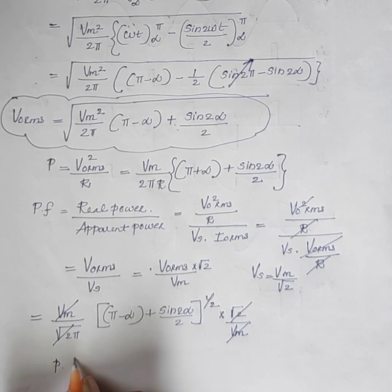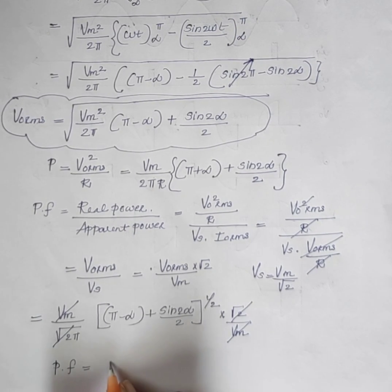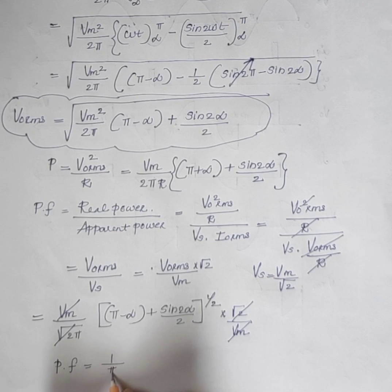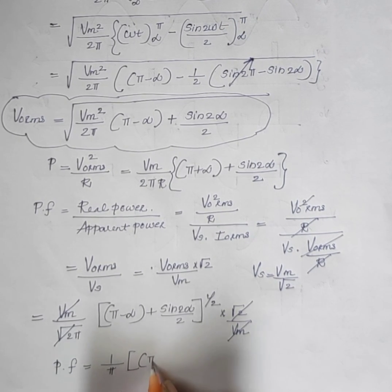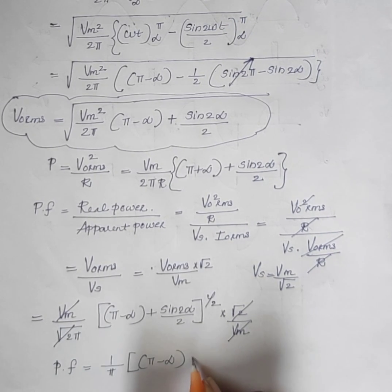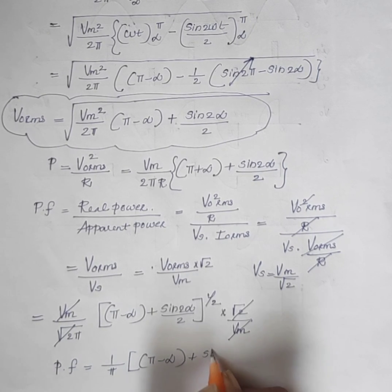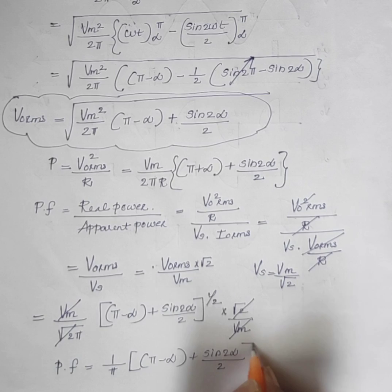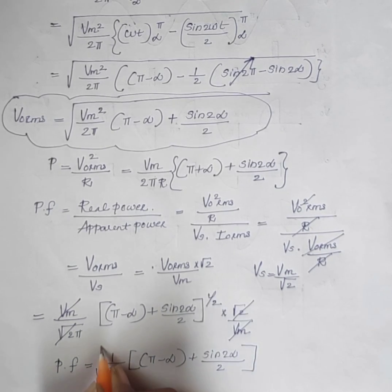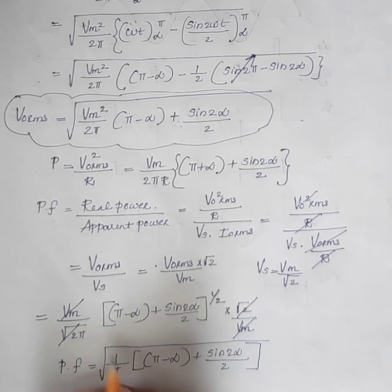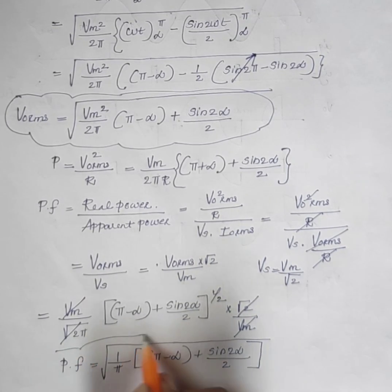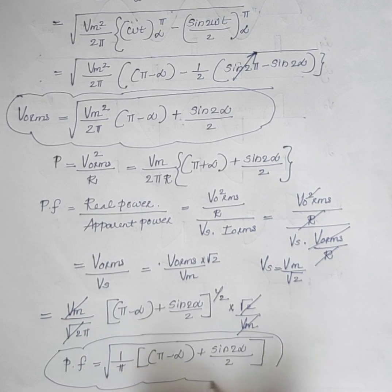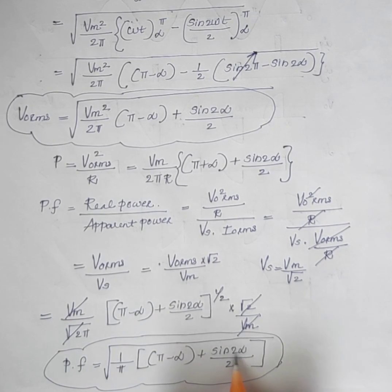Therefore, power factor is equal to the square root of 1 divided by pi times (pi minus alpha plus sin 2alpha divided by 2). Thank you.